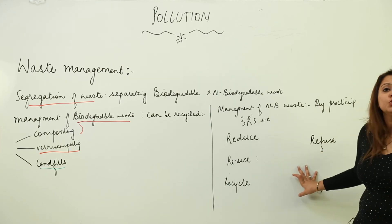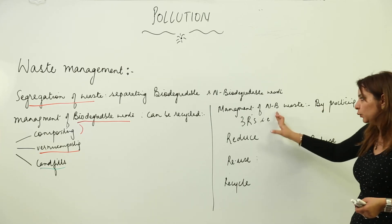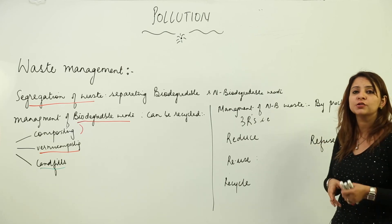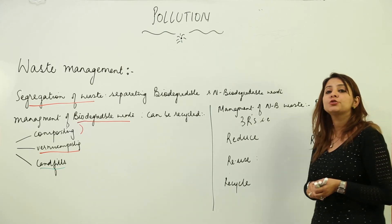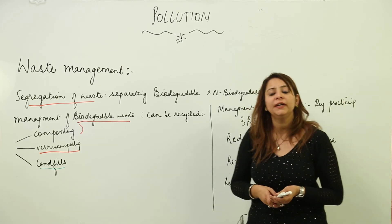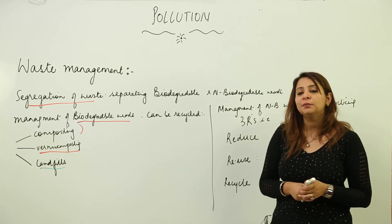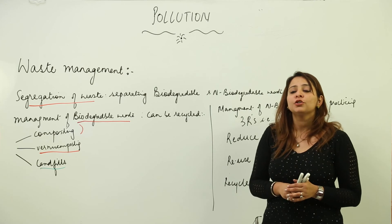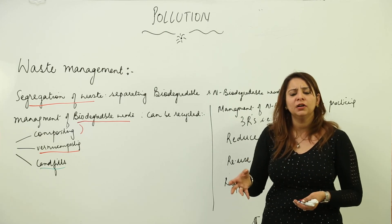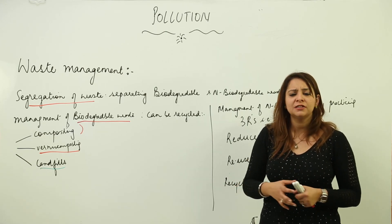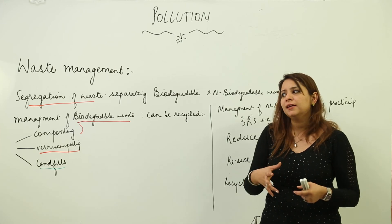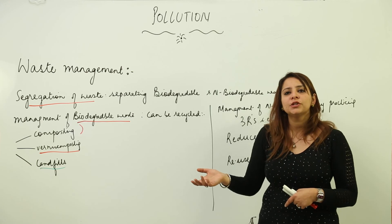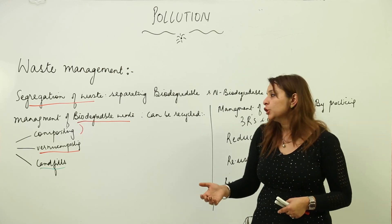And there is a fourth R which I haven't included in the three R's but we can still practice it — that is Refuse. Refuse means stop the use of non-biodegradable substances entirely. Do not use polythene bags or any kind of non-biodegradable item; try to use alternatives instead.